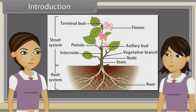When we observe a plant, we see that every plant has roots, stem and leaves. Plants also have flowers and fruits.